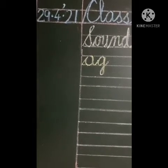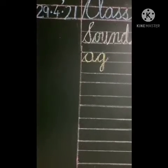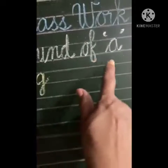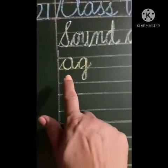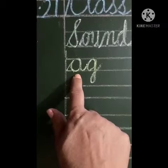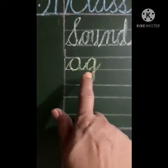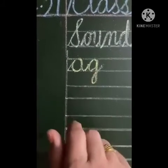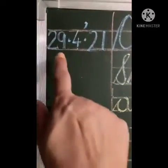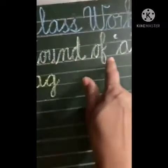Hello kids, welcome back for yet another session of English learning. Today we are going to take up the next set of words with the sound of 'a', and we are going to take up 'ag' family words. This sound is 'a' and this is 'g' — together blending them we get the 'ag' family. Write down the date and classwork as usual.